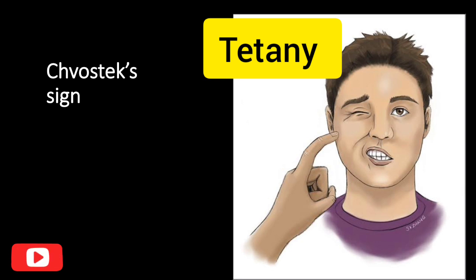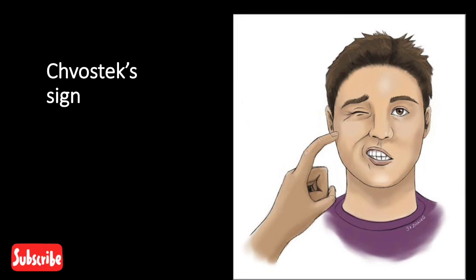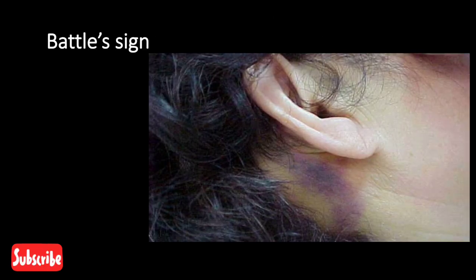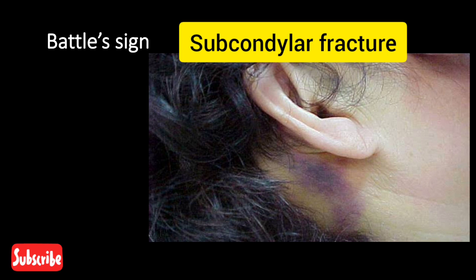Chvostek's sign: it is seen in tetany. Tapping at the angle of the jaw stimulates the facial nerve and causes twitching of the muscles of the face on the same side.